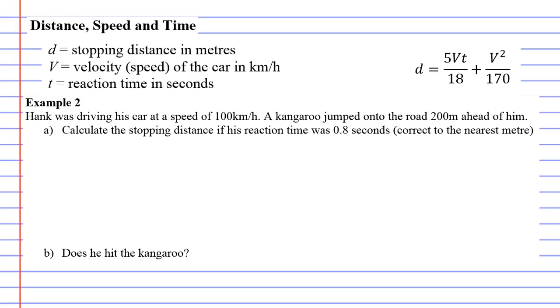So what we do first is we're going to use this formula, so we'll copy it down and we'll put any multiplication in place as well. So this is going to be 5 times v times t over 18 plus v squared over 170.